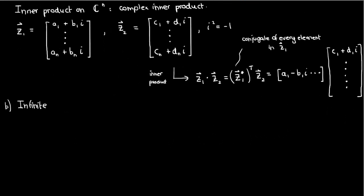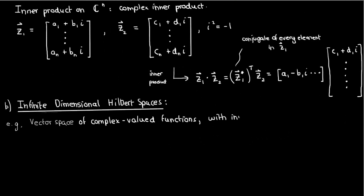The second type of Hilbert spaces are infinite dimensional Hilbert spaces. An example of this is the vector space of complex valued functions, which has the following inner product, where the inner product of two functions, psi and phi, is given by the integral from negative infinity to infinity of the conjugate of psi times phi dx.